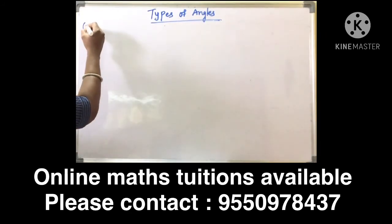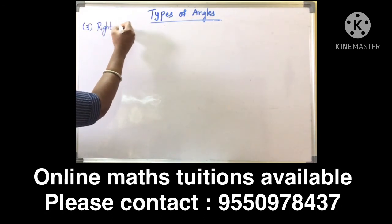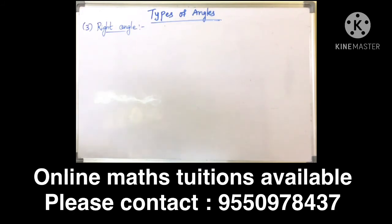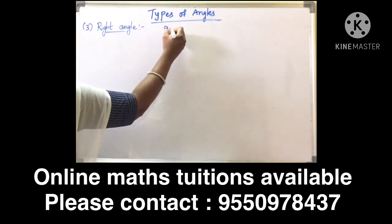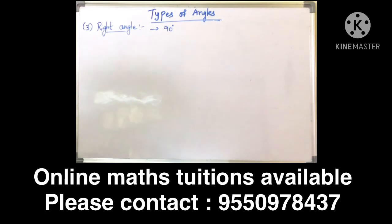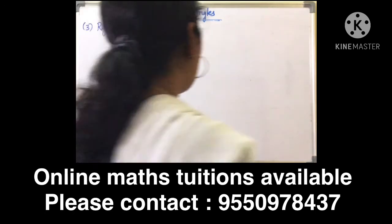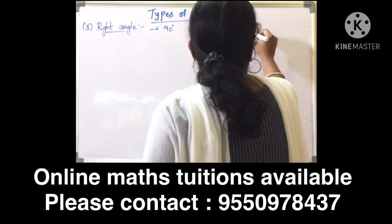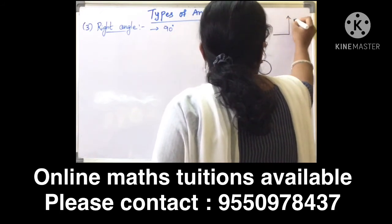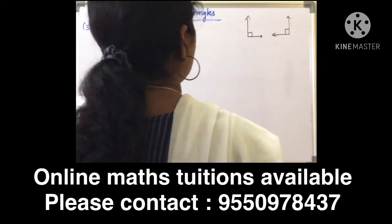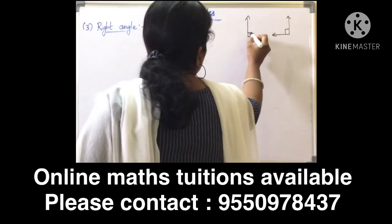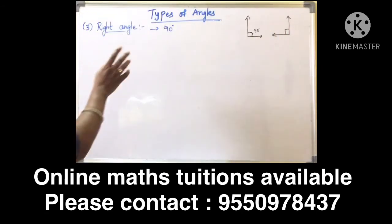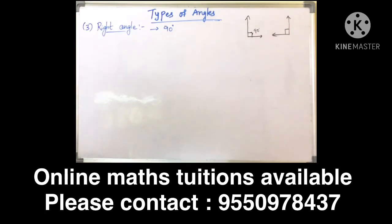The third type is right angle. An angle whose measure is exactly 90 degrees is called a right angle. The shape looks like a square corner, and the small square symbol represents 90 degrees.